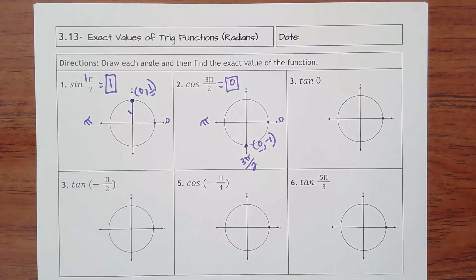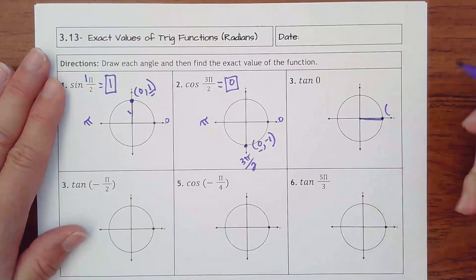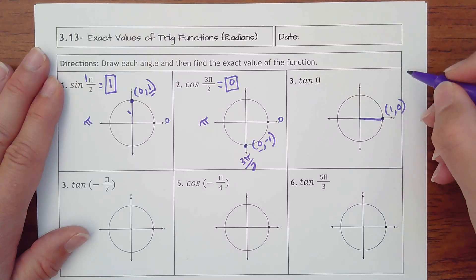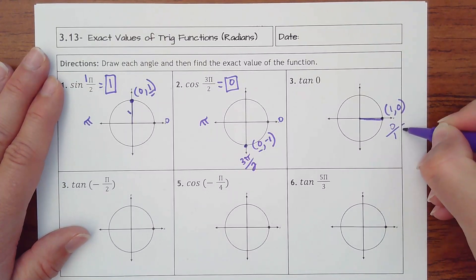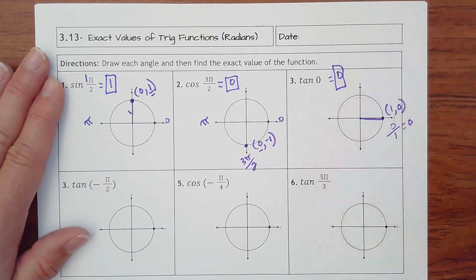Tangent of 0, so that would be our point is just here. That is the point 1, 0. Y divided by x would be 0 over 1, which is 0. Again, we could think of tangent being the slope of that horizontal line, which is 0.